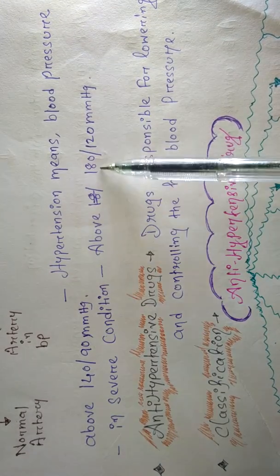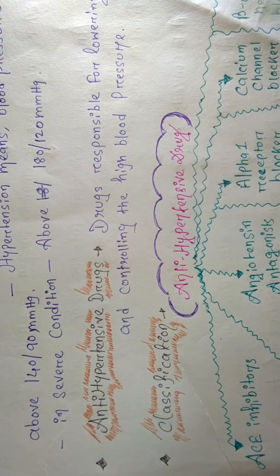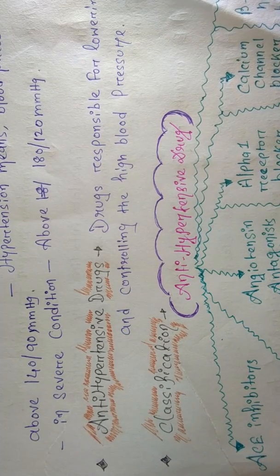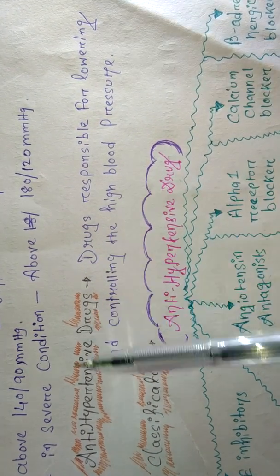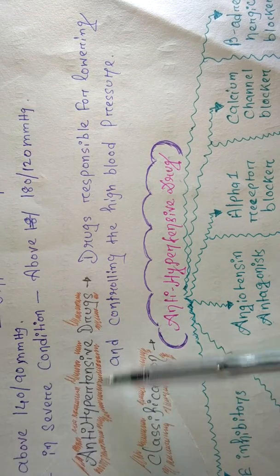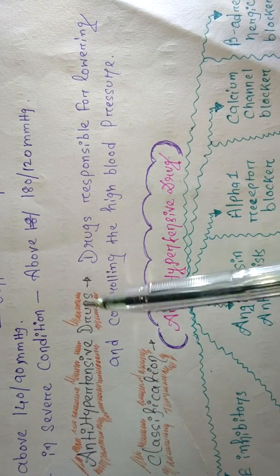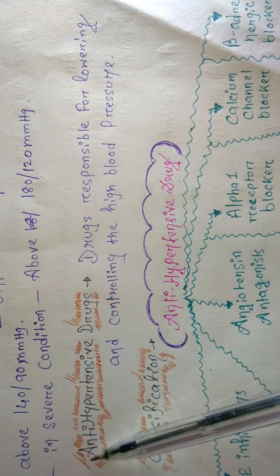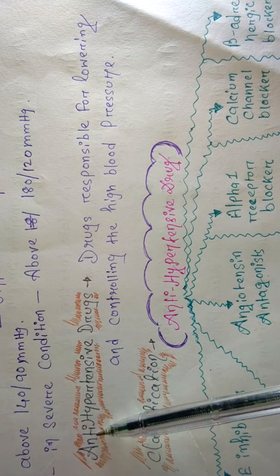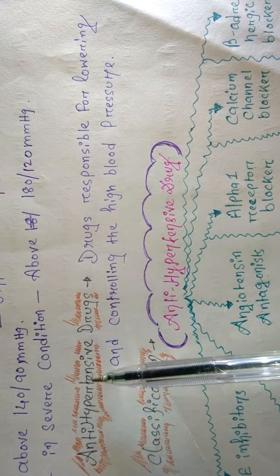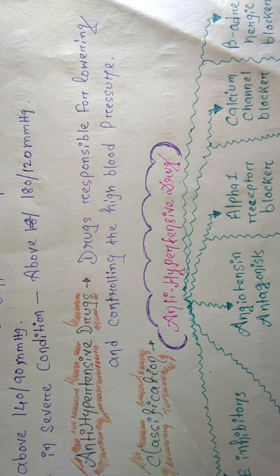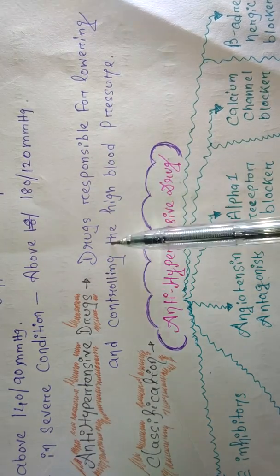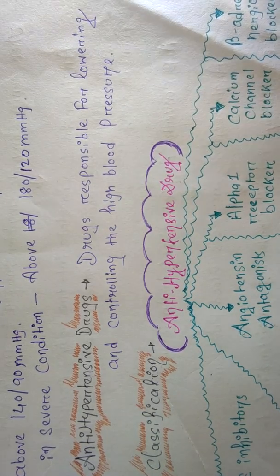After that you will define anti-hypertensive drugs. The name is telling us very clearly: anti-hypertensive drugs means the drugs which we give to control high blood pressure. So, anti-hypertensive drugs are drugs responsible for lowering or controlling high blood pressure.